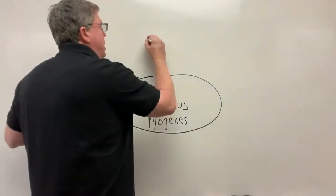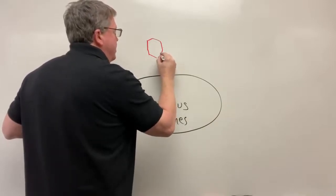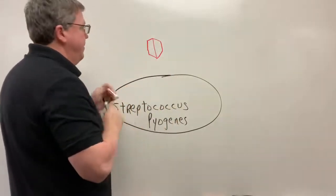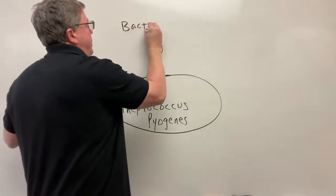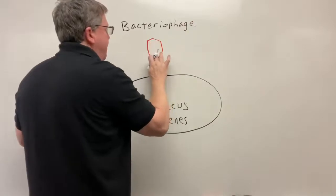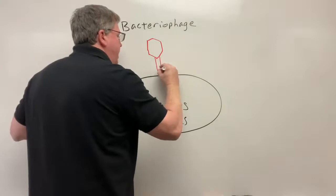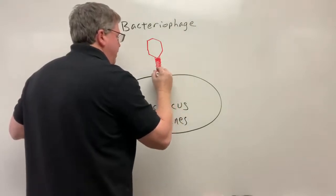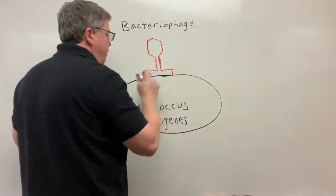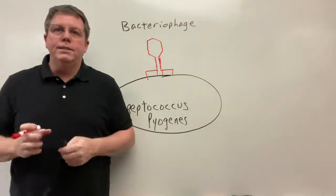You are going to get a certain type of virus that's going to land on this strep here, and this type of virus is called a bacteriophage. The bacteriophage looks almost like a spider to a certain extent, and it is going to land on the cell wall of the bacteria.